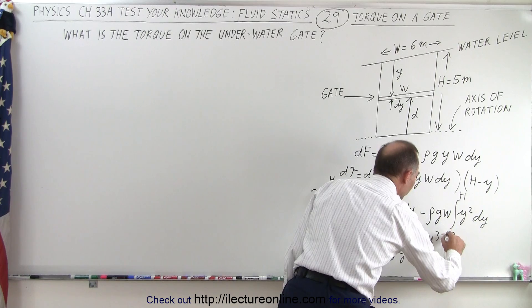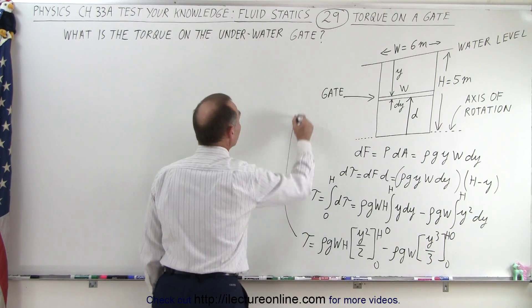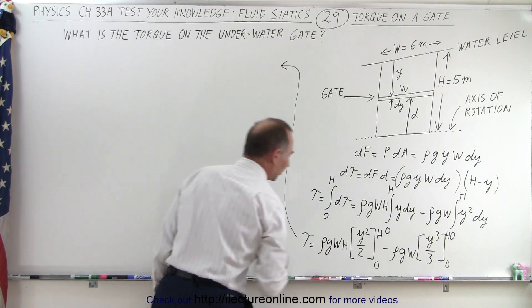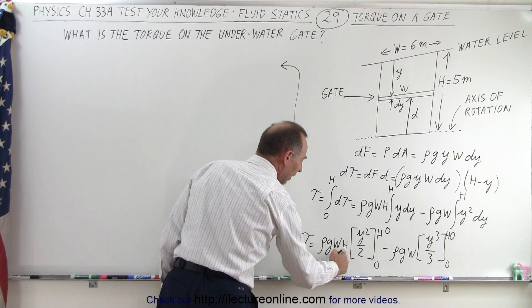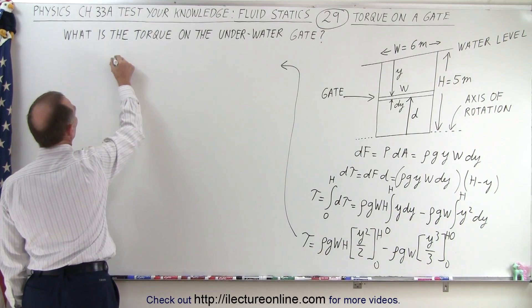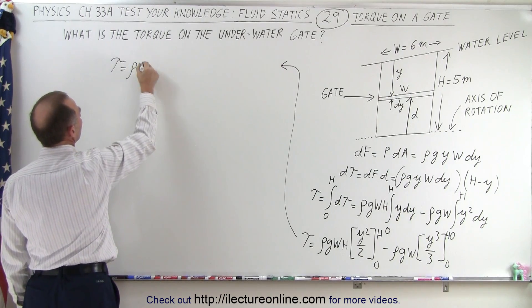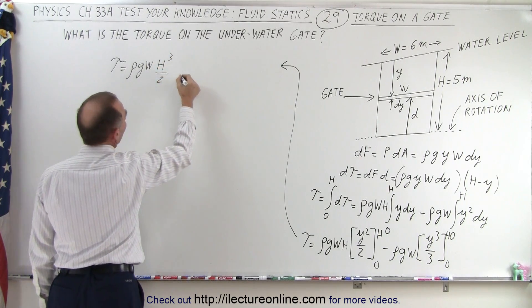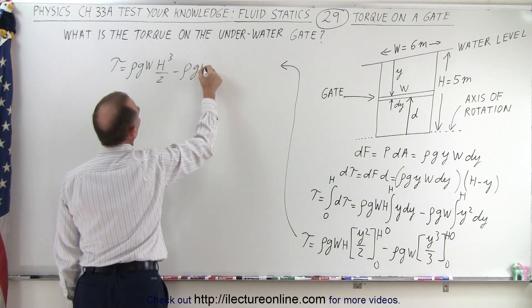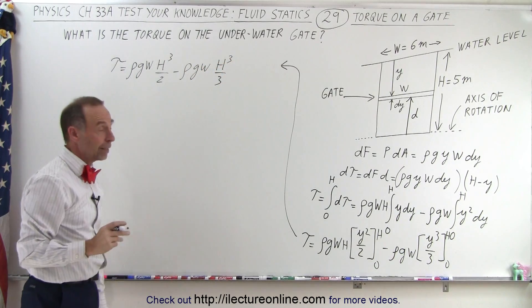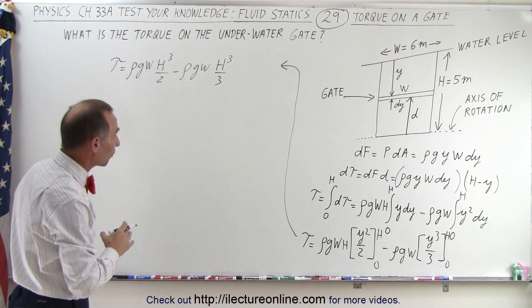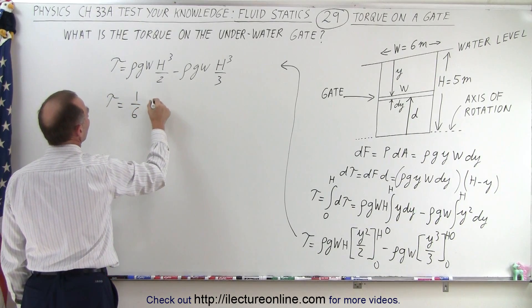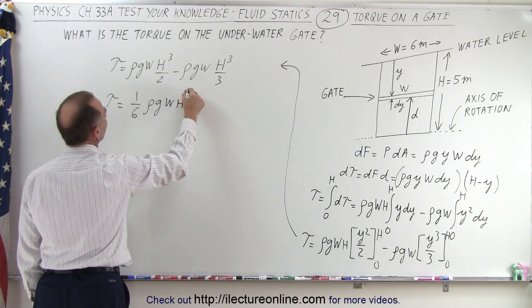All right let's continue that over here. So now when plugging the lower limits we get nothing, so we plug in the upper limits we have H squared times H which would be H cubed. So that gives us the torque is equal to density times G times W times H cubed over two minus density GW times H cubed over three. Now H cubed over two minus H cubed over three that would be H cubed over six so this torque would be equal to one-sixth density G W H cubed.